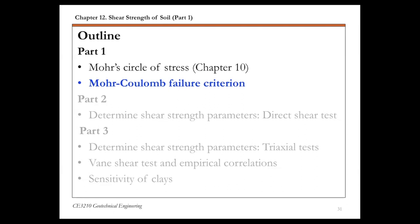Last time we talked about Mohr circle stress, which gives you a way to estimate normal and shear stress on any plane in a soil mass. And to know if soil fails, we need some criteria. So that's the Mohr-Coulomb failure criterion we're going to discuss today.